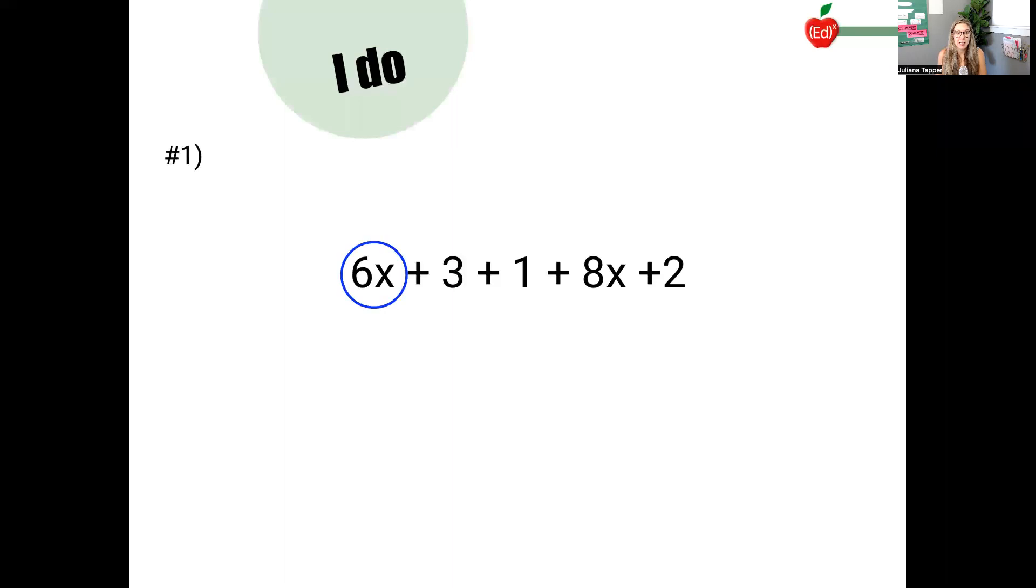So I have 6x. And as I look at that expression, the other thing that needs to be in a blue circle is the positive 8x. And I want to include the symbol either positive or negative in front of it. There's nothing else that has the x. So I'm done identifying that like term. The next term I see is a positive 3. I'll put that in a red square and the positive 1 should go in a red square and the positive 2 should go in a red square.